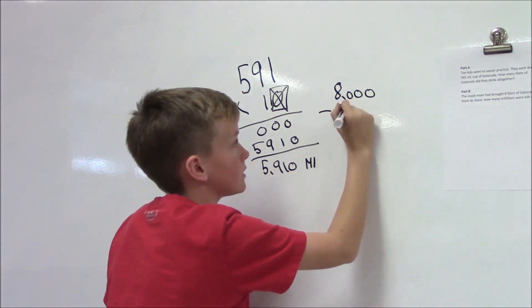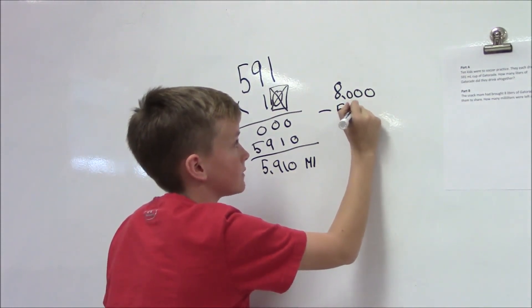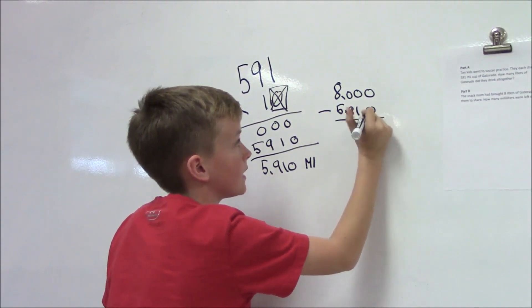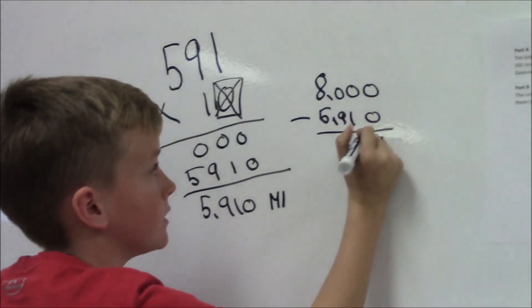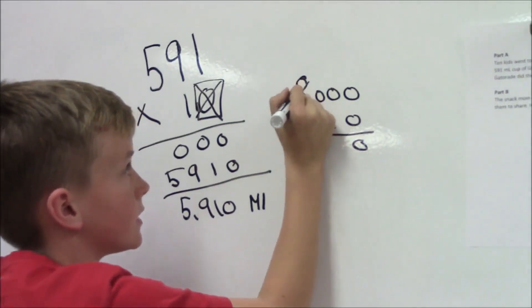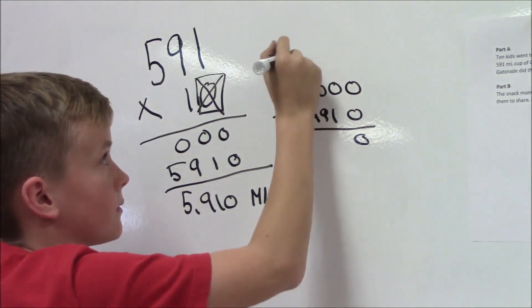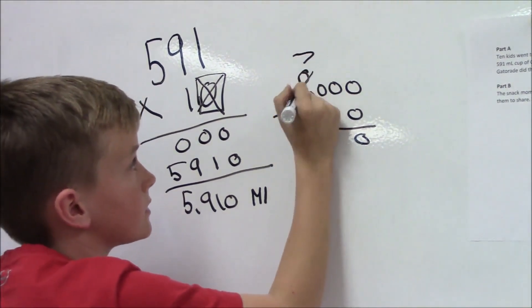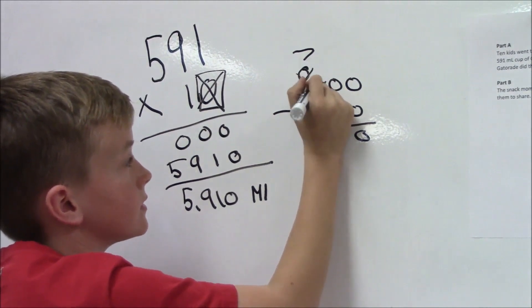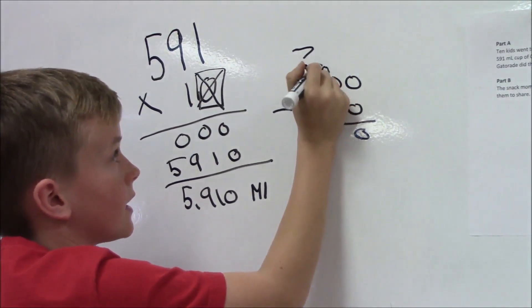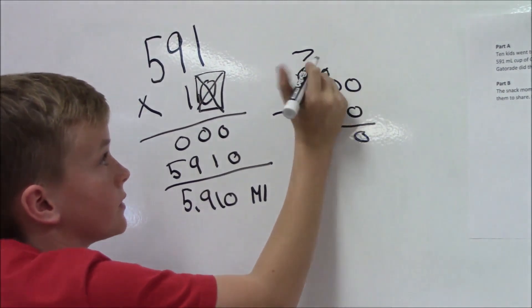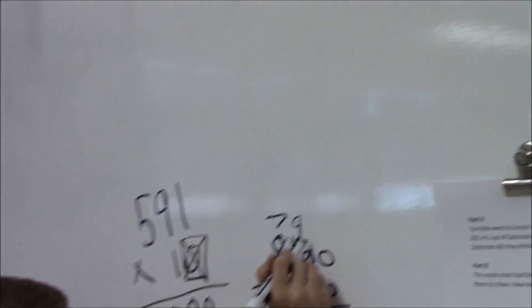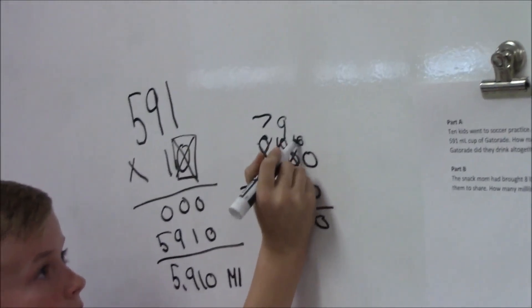So we do 8,000 minus 5910. We do 0 minus 0 equals 0. We regroup because we don't have enough for 1 minus 0. We cross the 8 out and then we cross the 0 out. We give that 10, but we don't have enough still. We have to regroup it to there. Then we do 9. Then we cross the 0 out and give it 10.